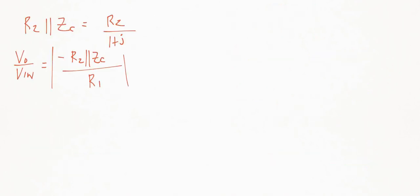So I've rewritten it here that the parallel combination of R2 and ZC is equal to R2 over 1 plus j. And I also wrote the gain equation that we're trying to solve here. And so when we plug in here, we can plug in this parallel combination with the negative, and we get R2 over 1 plus j, and that's going to be divided by R1. But recall that we were given that R2 is equal to 10R1, and so R1 is going to be R2 divided by 10. And so we can plug that guy into here.